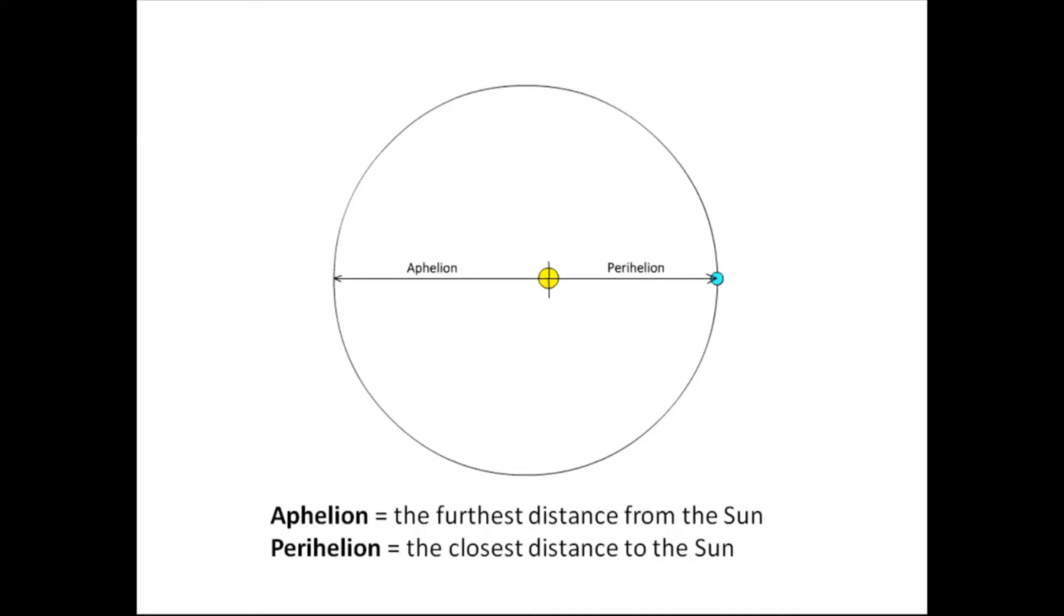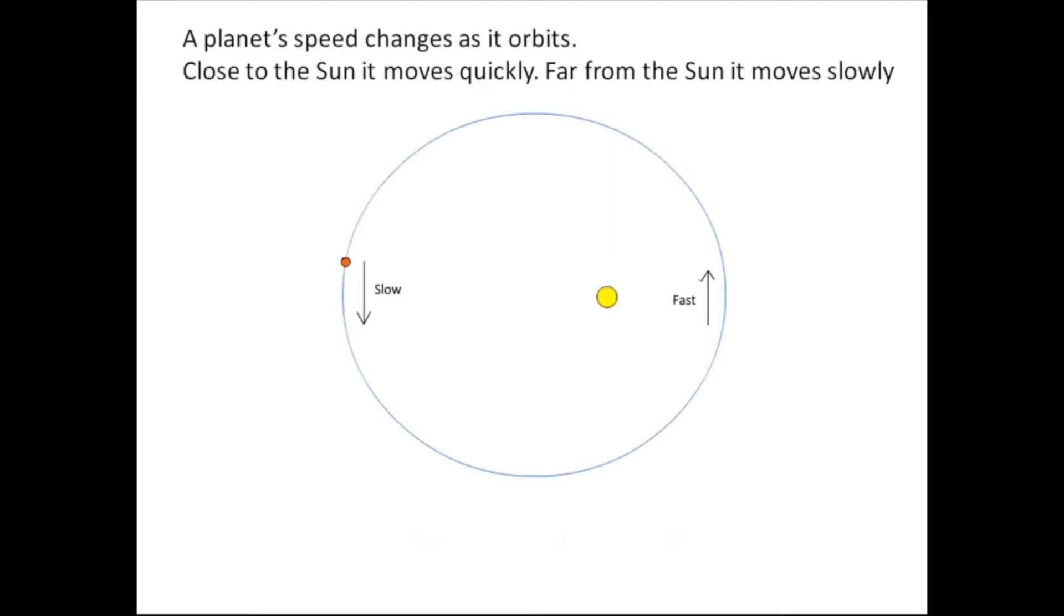So aphelion and perihelion are two words that you need to know the meaning of. And Kepler's first law says that planets go around the sun in an ellipse with the sun at one of the foci of the ellipse. Now, as a planet moves around the sun, its speed changes. When it's close to the sun, it's moving faster. When it's further away from the sun, it moves slower.